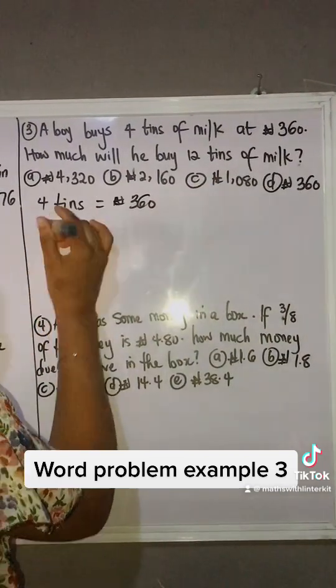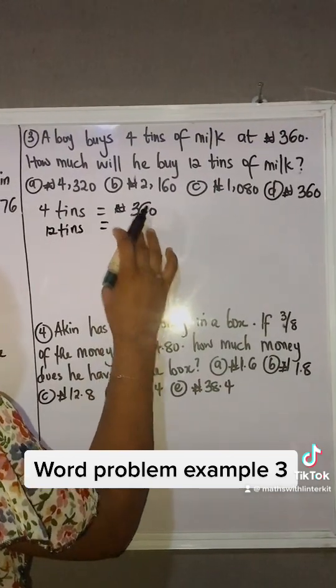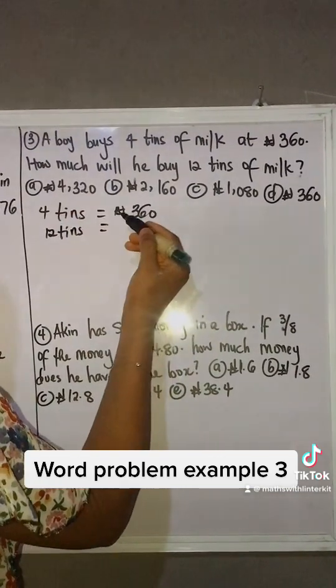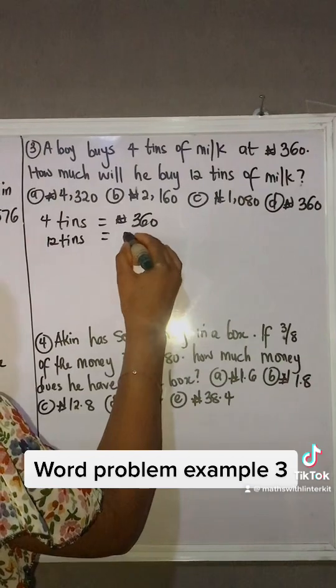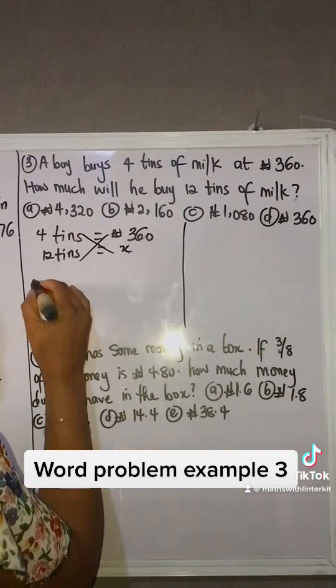So where I have 4 tins, I'm going to write 12 tins there. How much? We're looking for the cost we don't know, so let's represent it as x. We cross multiply: 4 times x will give me